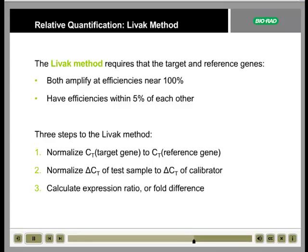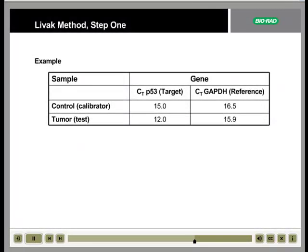In the third step, calculate the expression ratio, or fold difference. In this example of the Livak method, we examine the CT values for the target gene, P53, and for the reference gene, GAPDH.